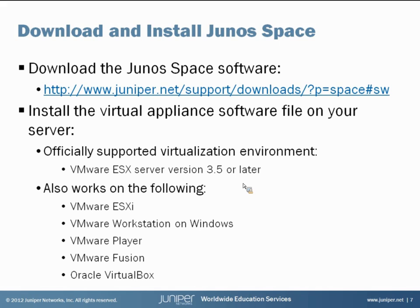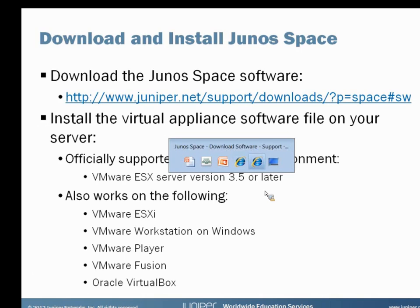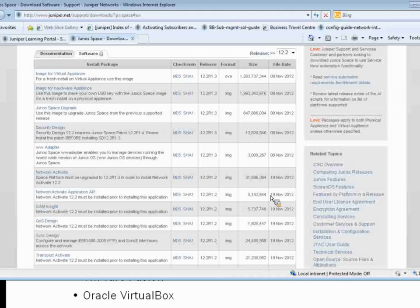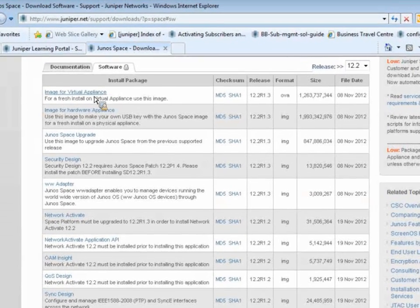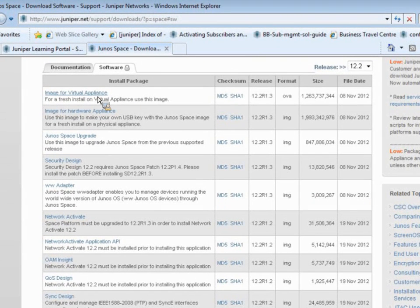The supported server platform is the VMware ESX server, though it can also work on other platforms listed. For this demonstration, we're going to install it on a VM server environment. Here's the software image file page on Juniper's site. This is the file you want — the OVA file for the virtual appliance. You need to install this on a supported server platform to use this image.